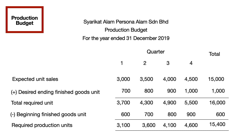You will then get the required production units for every quarter by deducting the beginning goods from the total required units. Please note that the total of required production units can be obtained when you total the table either vertically or horizontally.